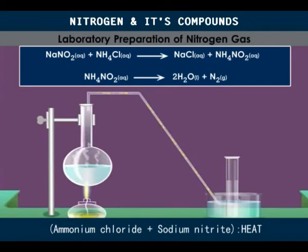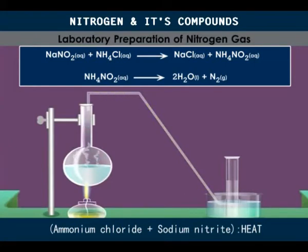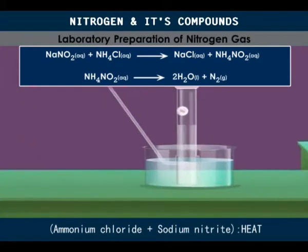If dry nitrogen gas is required, it should be passed through a U-tube containing beads wetted with concentrated sulfuric acid, and then collected in a syringe. Nitrogen prepared in this method is pure and free of noble gases. It is less dense than the one prepared by the removal of oxygen and carbon dioxide from air.